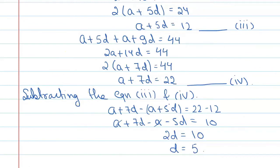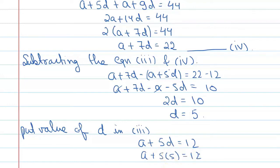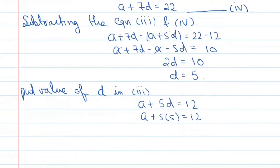Alright. Now, put this value of d in equation number 3. It is A plus 5d equal to 12. So, this will become A plus 25 equal to 12. So, A will be equal to minus 13. Now, you have A equal to minus 13, d equal to 5. Now, with the help of the formula of Sn, you can find the value of sum of n terms.